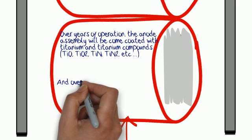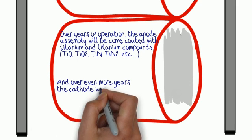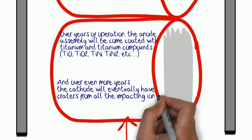And over the years, that cathode will eventually have craters form from all the impacting ions.